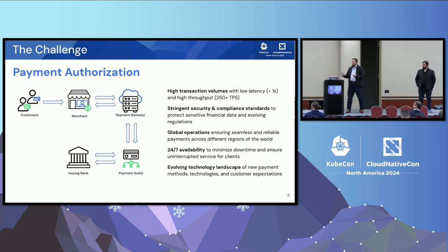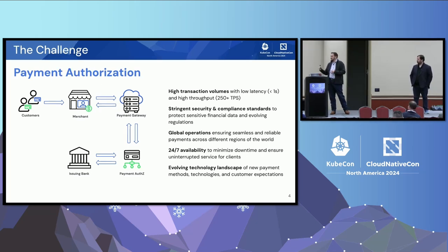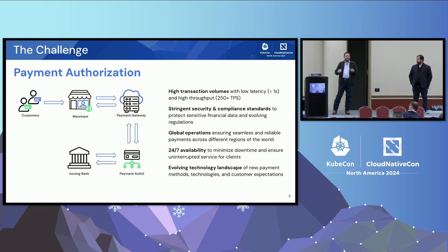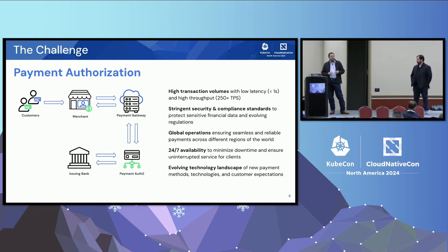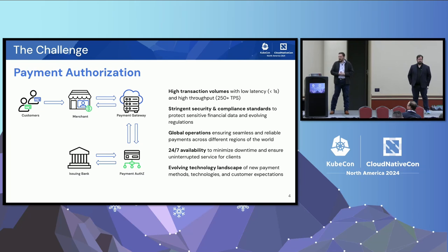We need to make sure we have global operations to ensure seamless, reliable payment processing around different regions of the world. Ultimately, we need 24/7 availability. Because we are a global company working with clients all over the world, we don't get the luxury of any downtime. The technology landscape is constantly evolving — think about even five or six years ago, tap to pay wasn't a thing. Well, it is now. We have to meet that, because our customers ultimately expect us to be able to do that.